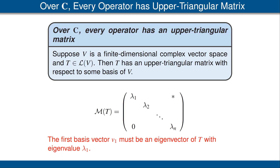The book gives two different proofs of this result. Be sure to read them and understand at least one of them. By the way, this result is not true on real vector spaces. This theorem fails on real vector spaces because an operator on a real vector space might not have any eigenvalues or eigenvectors. However, as we have discussed, the first basis vector that gives an upper triangular matrix must be an eigenvector. Thus, if T is an operator on a real vector space with no eigenvectors, then there is no basis with respect to which the operator has an upper triangular form.